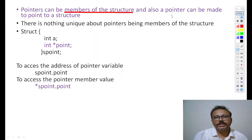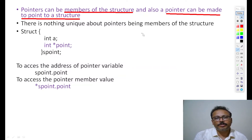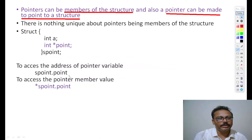A pointer can be made to point to a structure itself. Having a pointer as a member of a structure is the trivial case. To access the address of the pointer variable you use the dot operator, like s.pointer. To access the pointer member's value, you add a star. This applies when a pointer is a member of the structure.